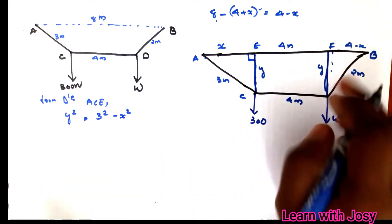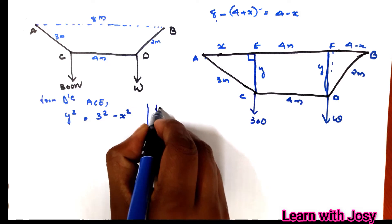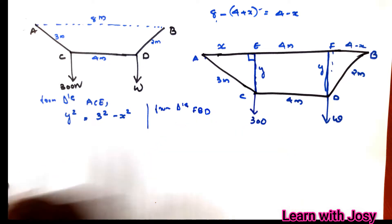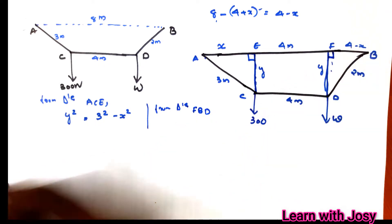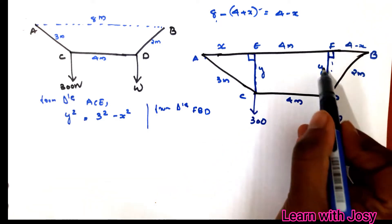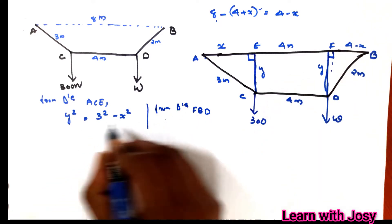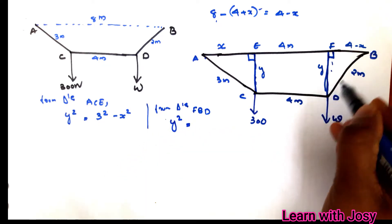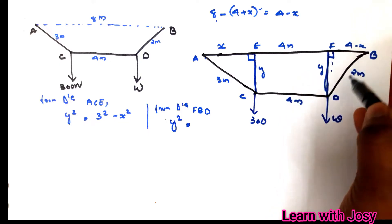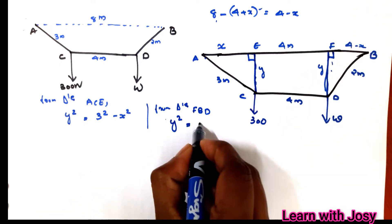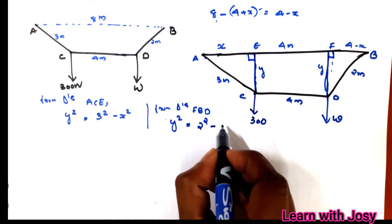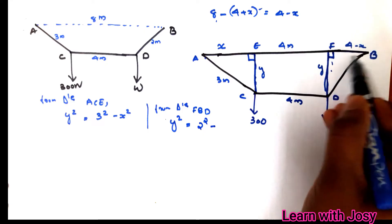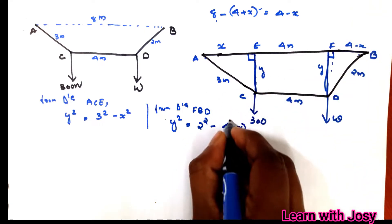For the triangle from FB, y-squared equals hypotenuse squared minus base squared. The hypotenuse is 2, so we have 2-squared minus the base squared, where FB equals 4 minus x. So y-squared equals 4 minus (4-x) squared.